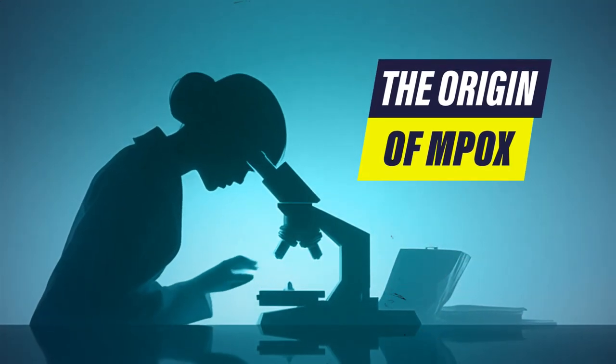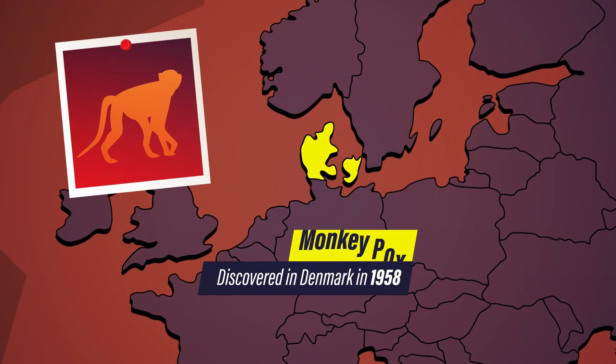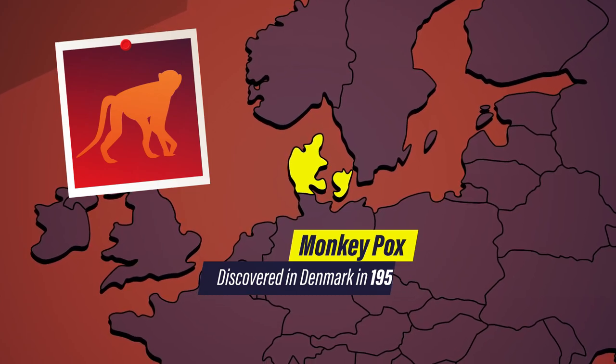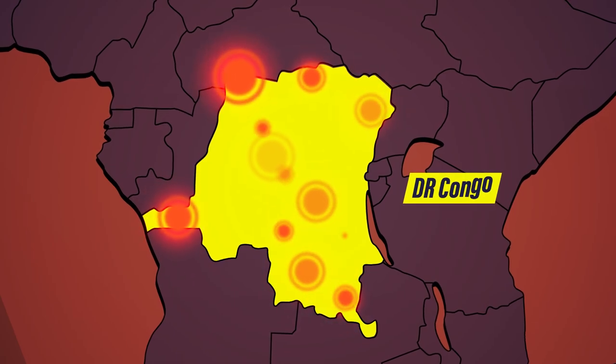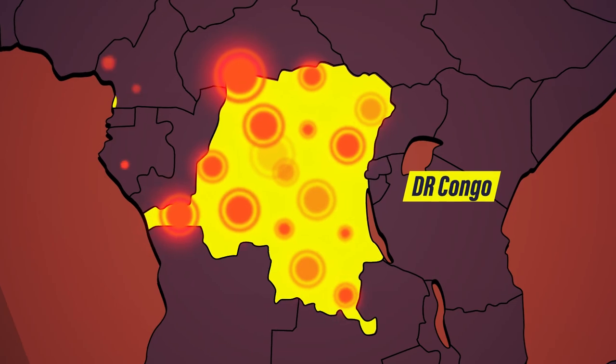The virus was first identified in 1958 in laboratory monkeys in Denmark, which is where the name monkeypox comes from. However, it wasn't until 1970 that the first human case was recorded in the Democratic Republic of Congo.